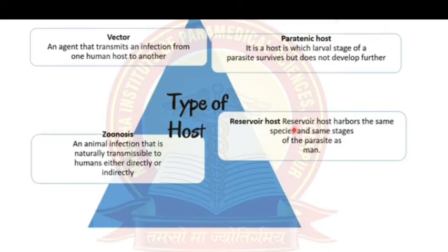Reservoir hosts harbor the parasite and can transmit infection directly to another person via kissing, sexual intercourse, or auto-infection. In auto-infection, while the parasite is in the body it enters an inactive stage, then later reactivates and re-infects the same host.